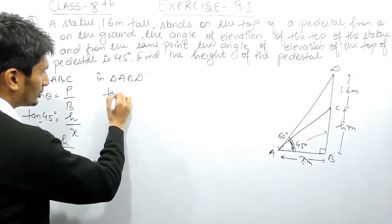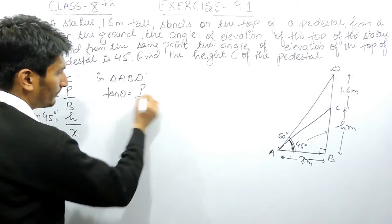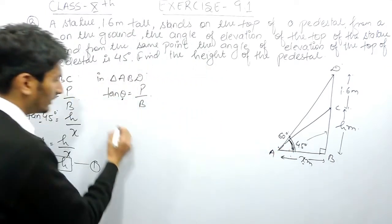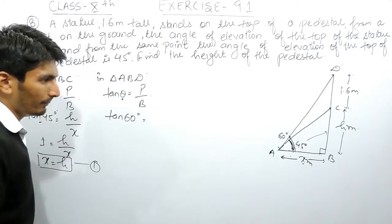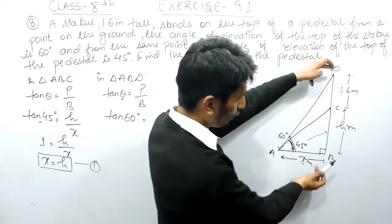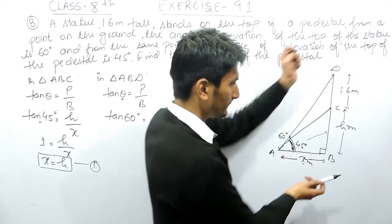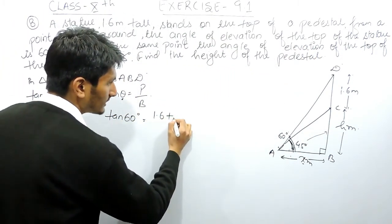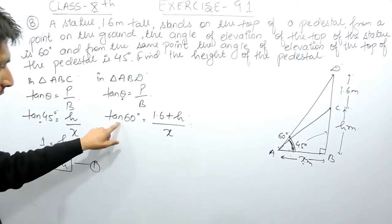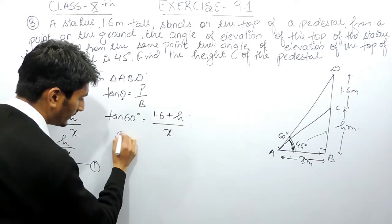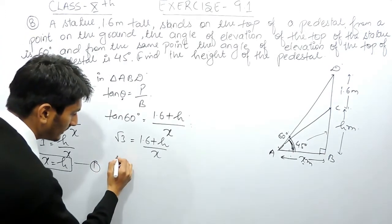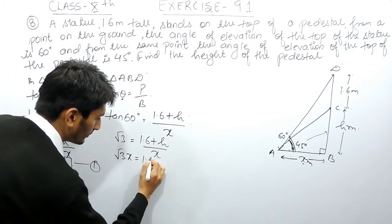In the second, bigger triangle ABD, tan θ equals perpendicular upon base. For this triangle, θ is 60 degrees. The perpendicular for this complete angle is the total height, which equals 1.6 meters plus h meters, and the base remains x meters. The value of tan 60° is √3, so √3 = (1.6 + h) / x. Cross-multiplying gives √3·x = 1.6 + h.